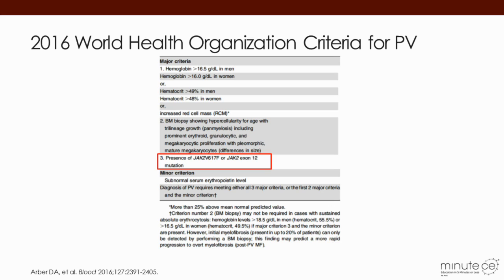Where do we put this information in everyday practice? We use it when we arrive at a diagnosis of polycythemia vera — this is where testing for the presence or absence of JAK2 mutations comes in handy. The WHO classification for myeloproliferative neoplasms has recently been updated, and the criteria for polycythemia vera highlight the identification of either the JAK2V617F mutation or JAK2 exon 12 mutation as part of the diagnostic process.